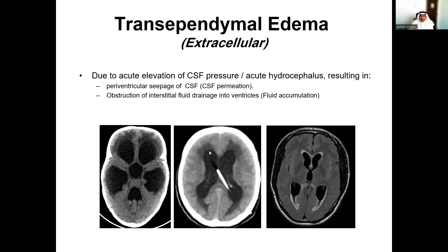Either way, it gives the appearance of low attenuation on CT, low signal intensity on T1, and high signal intensity on FLAIR and T2 on MRI. It is usually secondary to increased intracranial pressure. In one case shown, there is a VP shunt, possibly indicating shunt malfunction. In another case, there is hydrocephalus with periventricular low attenuation density indicative of increased intraventricular pressure.